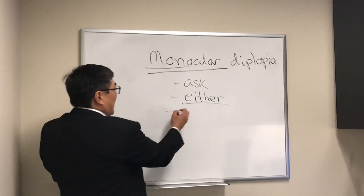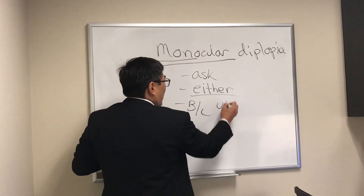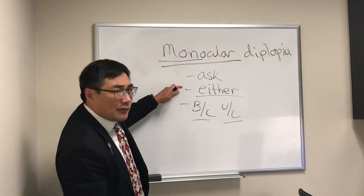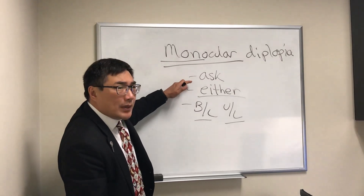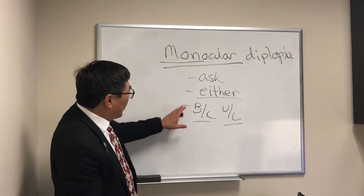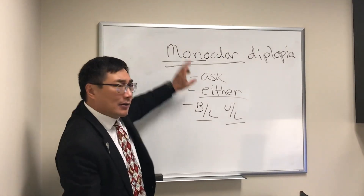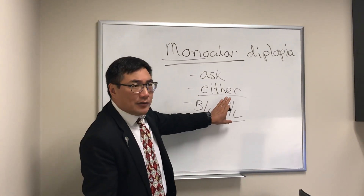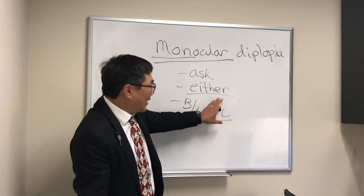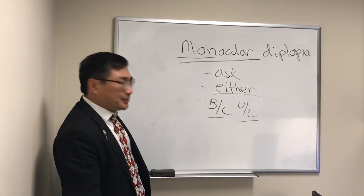Monocular diplopia can be bilateral or unilateral. If it persists when covering either eye and is present in both eyes, that's bilateral monocular diplopia. If it only goes away when covering one specific eye and not the other, that is unilateral monocular diplopia.